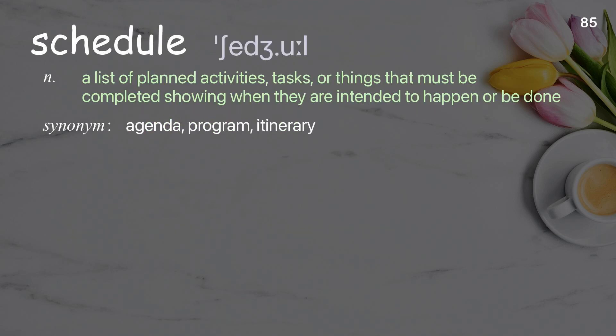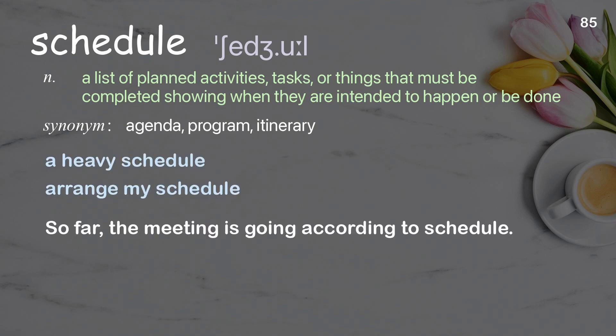Schedule: a list of planned activities, tasks, or things that must be completed, showing when they are intended to happen or be done. Examples: a heavy schedule, arrange my schedule. So far, the meeting is going according to schedule.